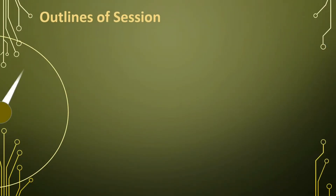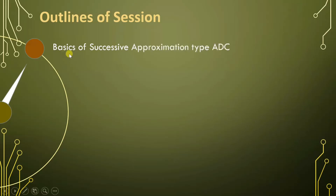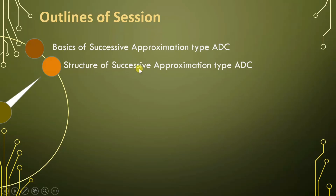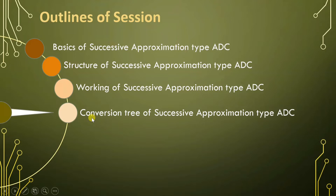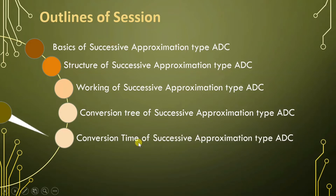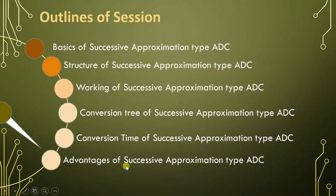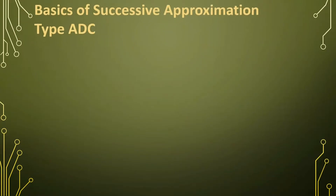In this video, first I'll discuss the basics of successive approximation type ADC. After that, I'll explain the structure of successive approximation type ADC. Based on its structure, we will see the working of successive approximation type ADC. To understand its working, I'll explain the conversion tree and conversion time. And at last, we will see the advantages of successive approximation type ADC. So let us begin with the first agenda: basics of successive approximation type ADC.